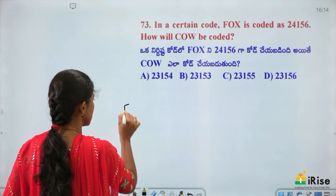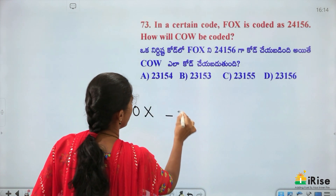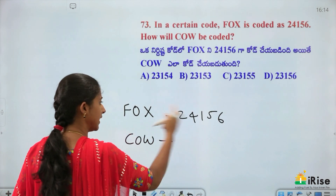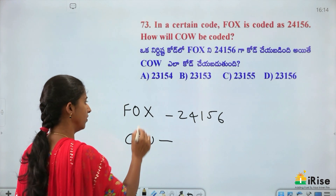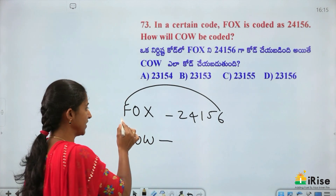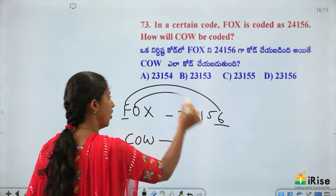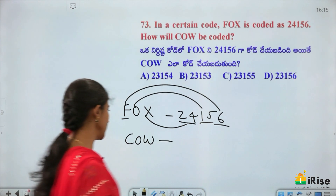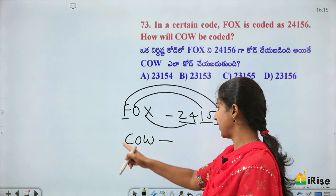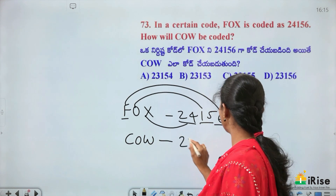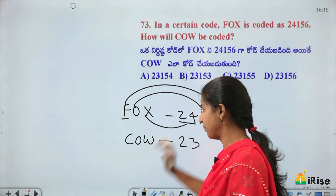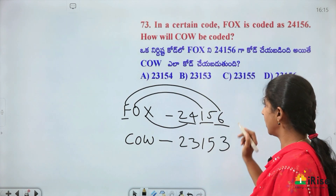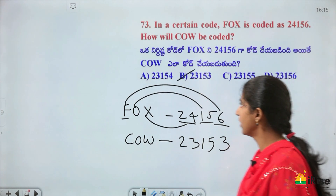In a certain code, fox is coded as 2, 4, 1, 5, 6. Letter to number coding: F is 6 (position value), placed last first. O is 15, middle stays same. X is 24, placed last first. Applying to COW: W(23) is placed first, O(15) stays middle, C(3) is placed last. So COW is coded as 23, 15, 3 — answer is option B.